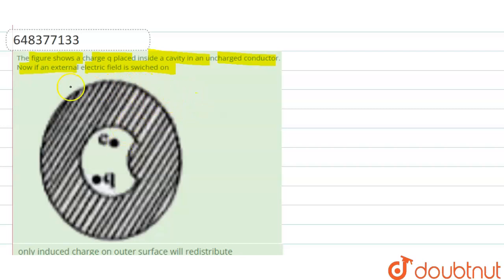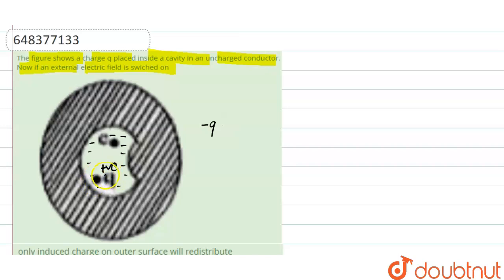We have to conclude what will happen if an external electric field is applied to this conductor. Suppose this charge q is positive. Due to this positive charge q, there will be negative charges induced on the inner surface of this cavity, and the net negative charge on this inner surface will be minus q — equal and opposite to the total charge plus q present inside.